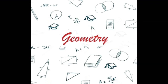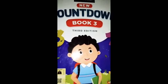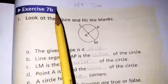Students, this is your geometry period and we are doing exercise 7b. Take out your maths countdown book and open page number 197. On page number 197, we are doing exercise 7b.